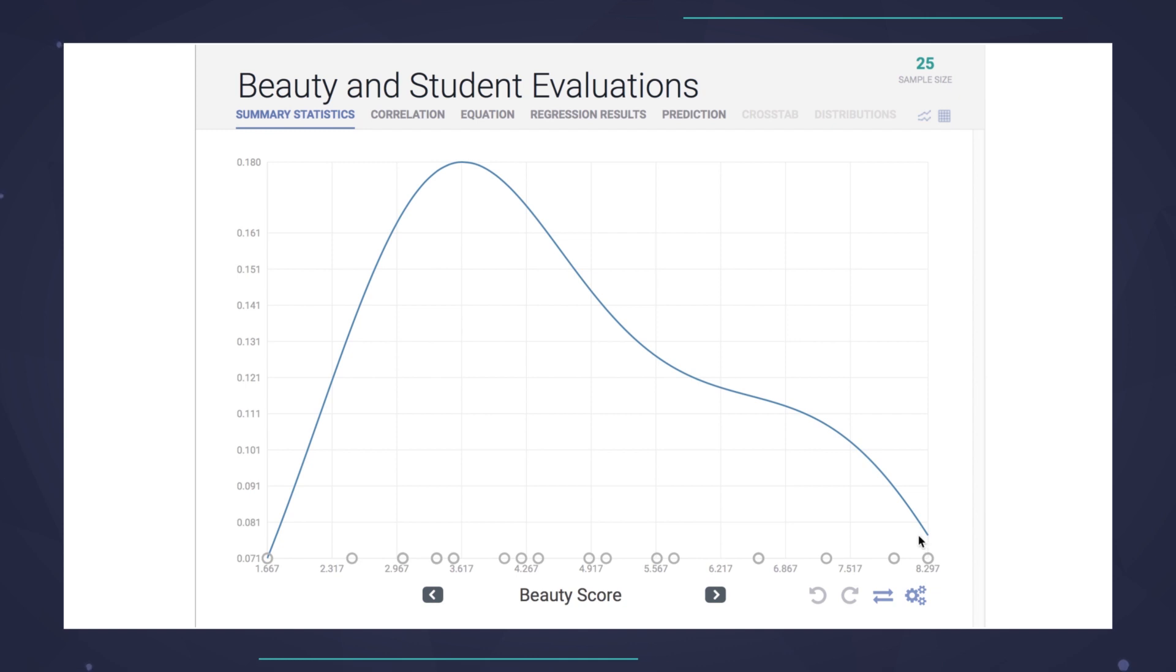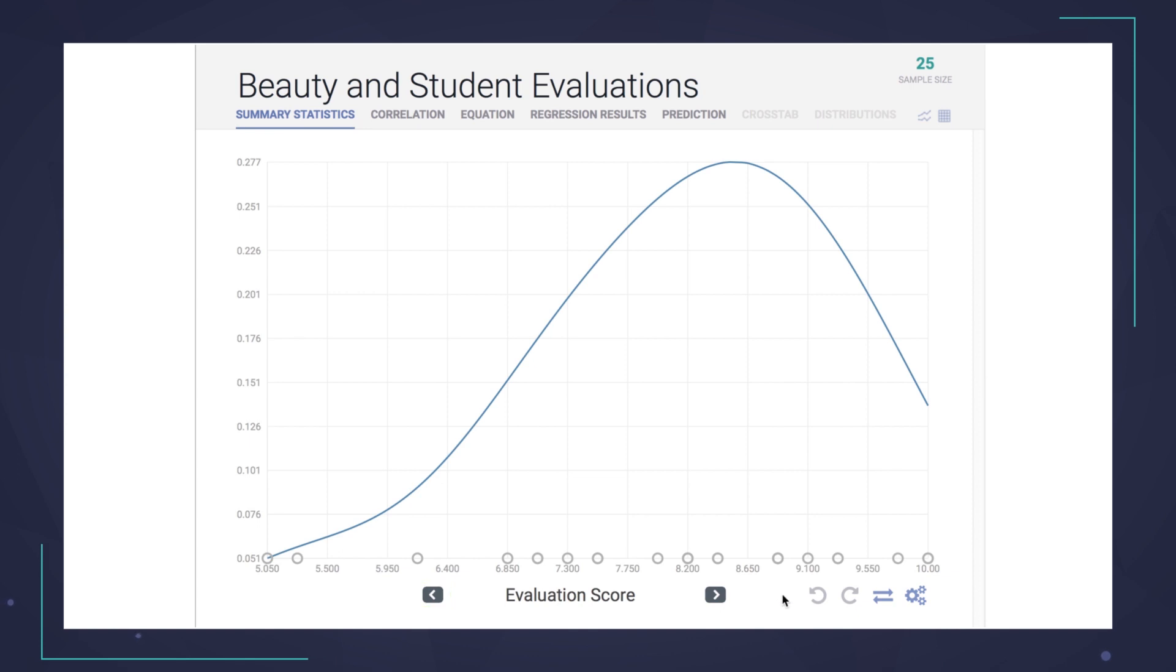For instance, look at the distribution of beauty scores in our data set. Most values are around 3 or 4 out of a possible maximum of 10. Ouch! Now, let's look at the distribution of evaluation scores. Well, looks like much better news here for our professors as we are seeing a lot in the higher end of the range.